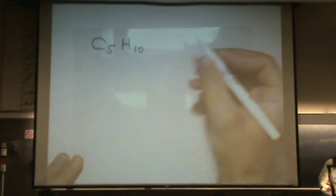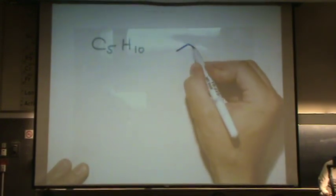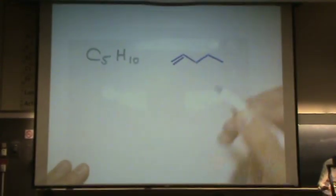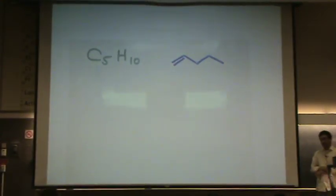So what I like to do, as I told you before, is start out with the longest straight chain. Now as I mentioned, if it was alkane, we'd have 12 hydrogens. But this only has 10, so I need to remove two. One way you can do that, put a double bond in there.